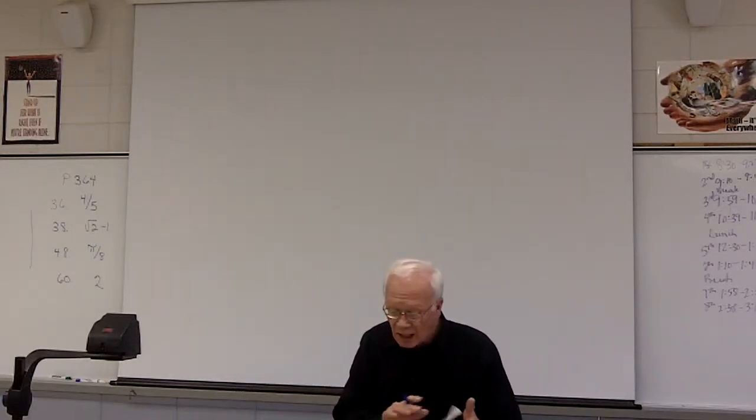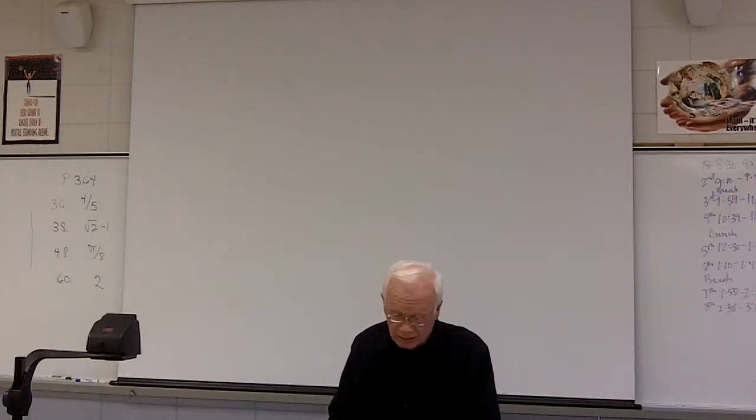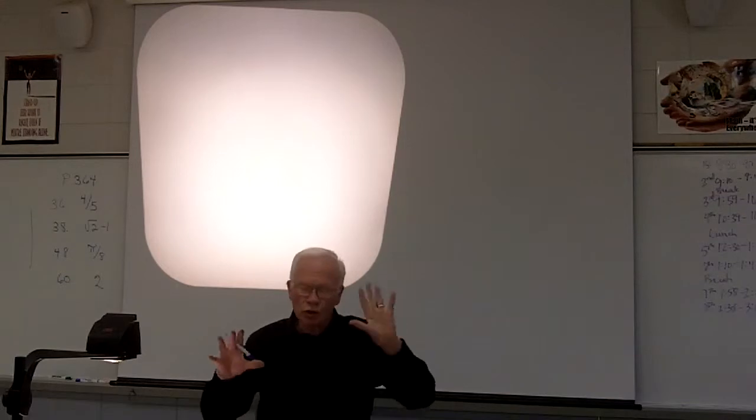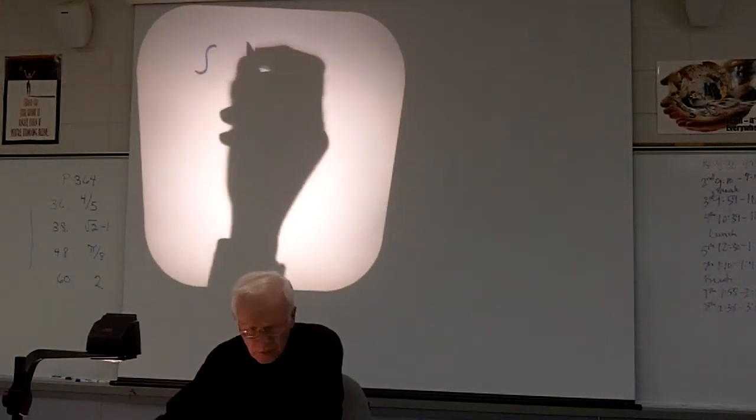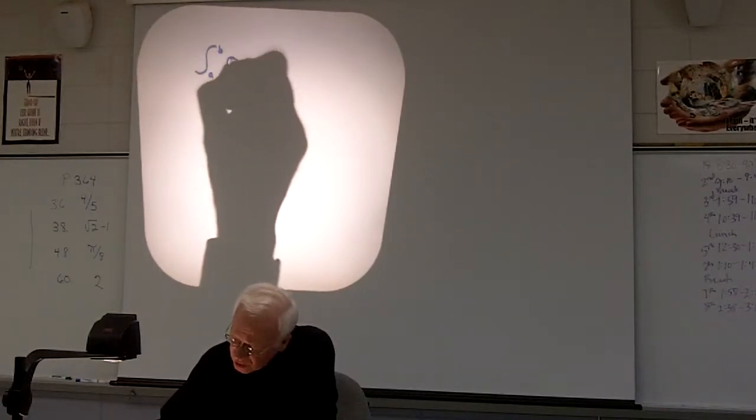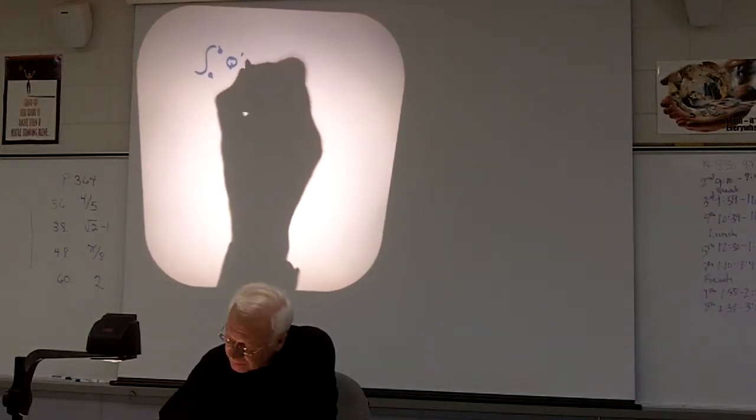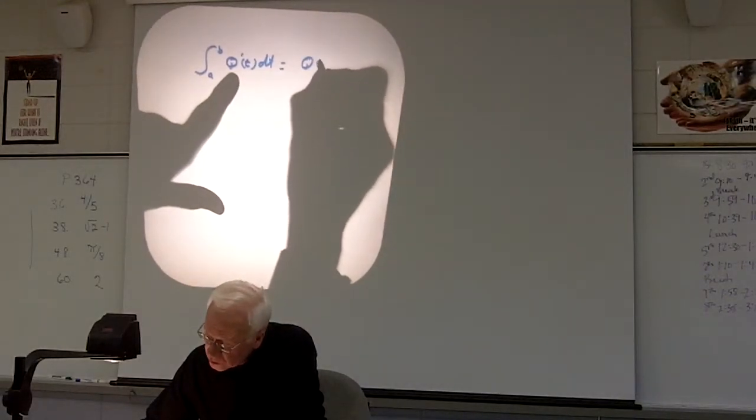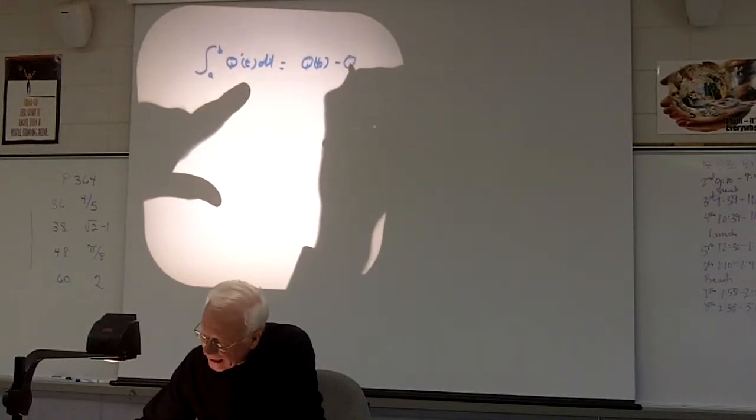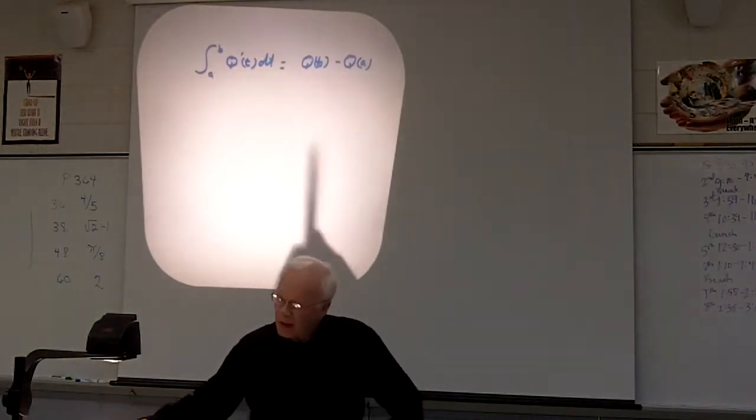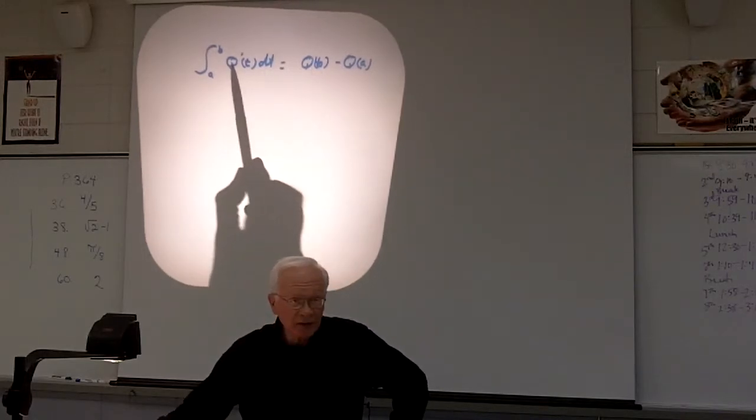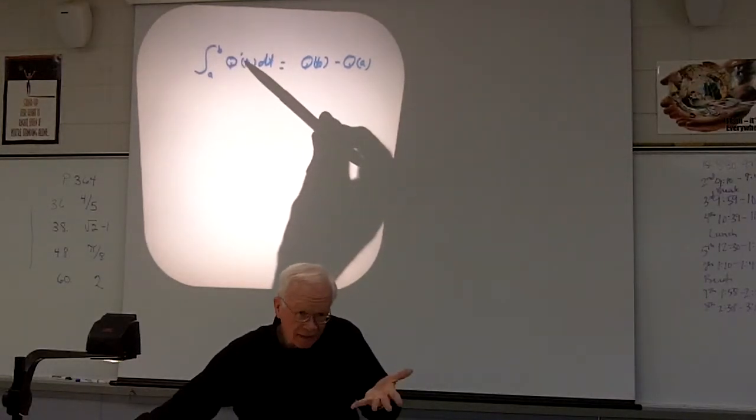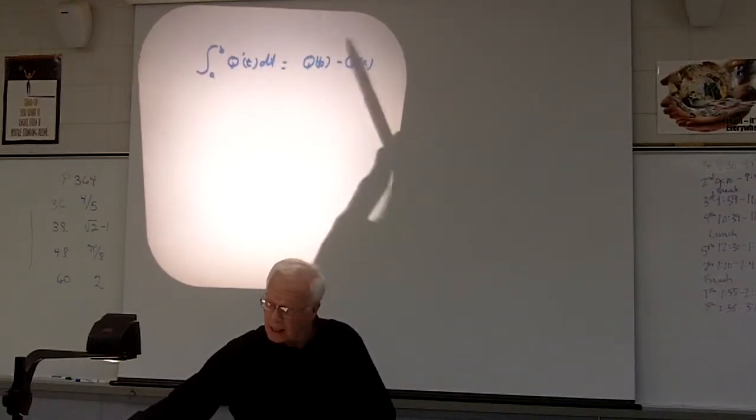We're going to take a look at problem five, example five, of page 377. We're going to go from A to B, and he says we're going to have here quantity derivative, which is a rate, at T, DT. Now, he says that's equal to Q at B minus Q at A. The thing here, if you take the derivative of this, you get this. But now, many times you're going to be given this rate, which we will be given in a few minutes, and then you'll have to find the anti-derivative.